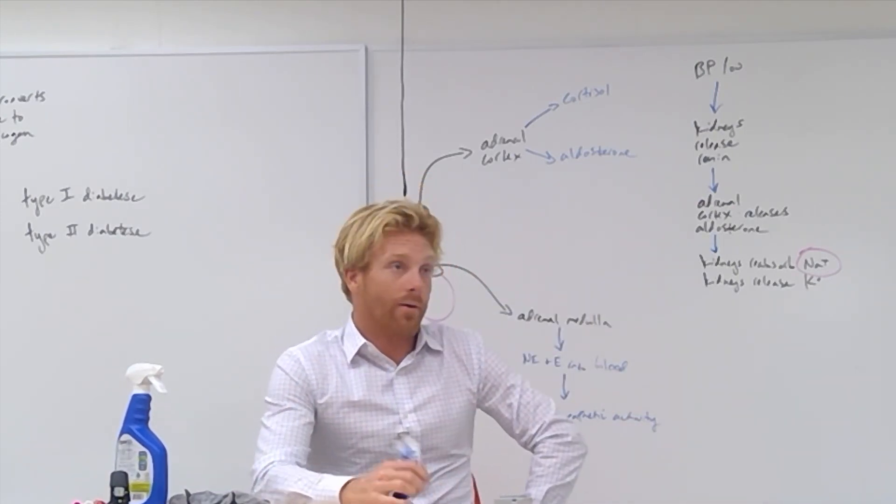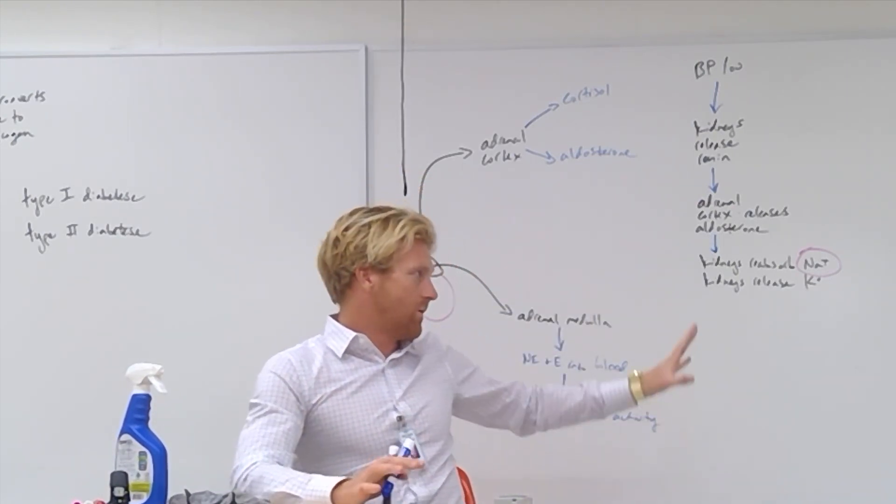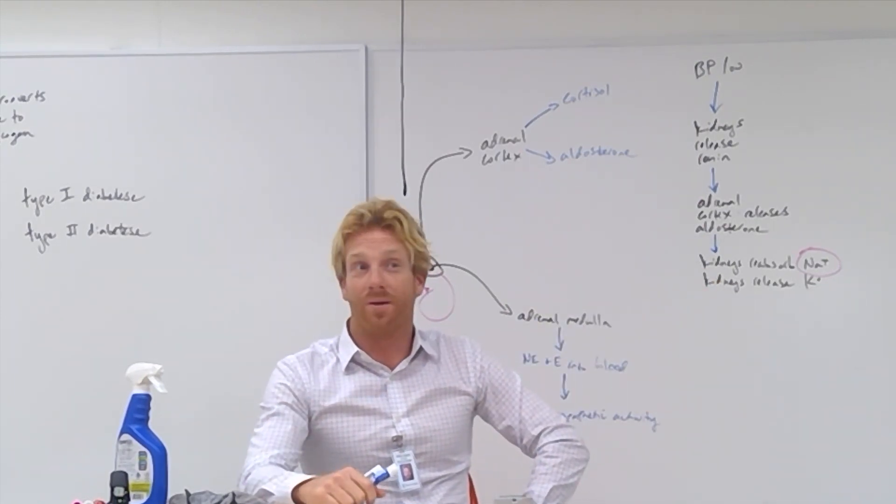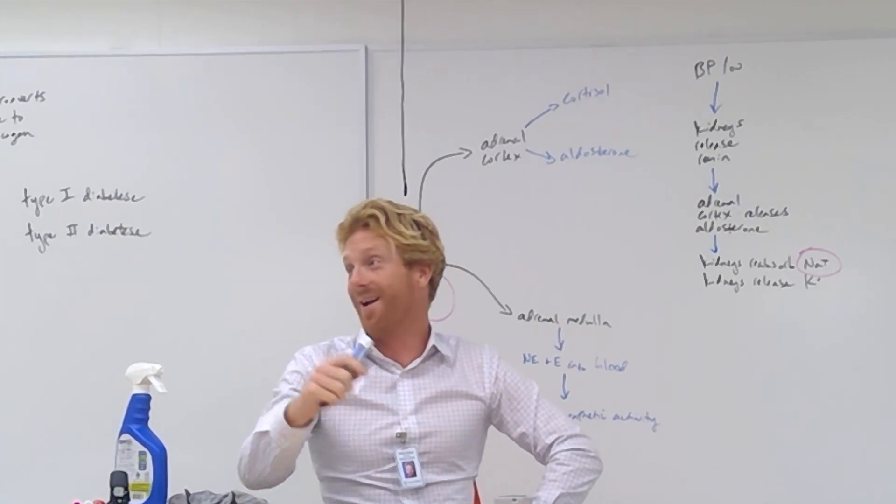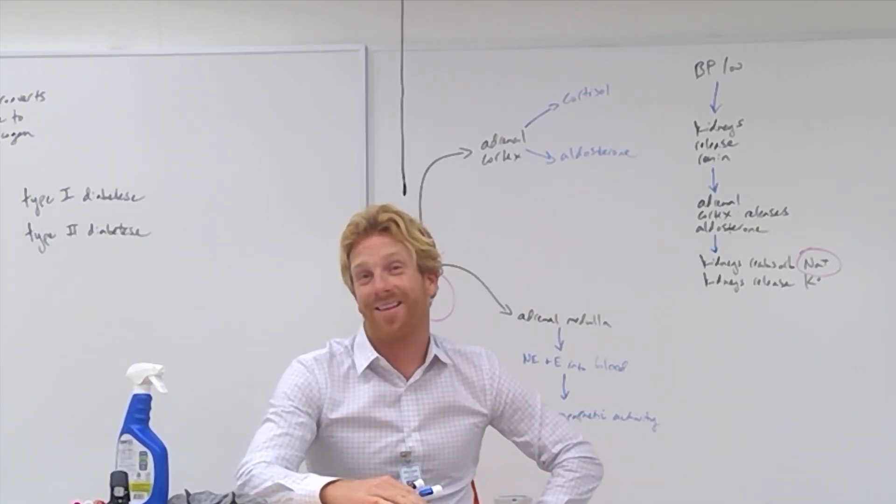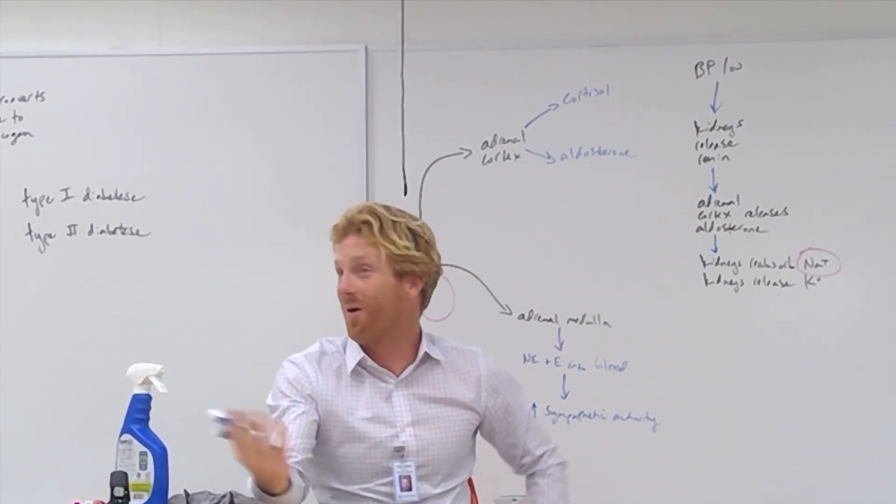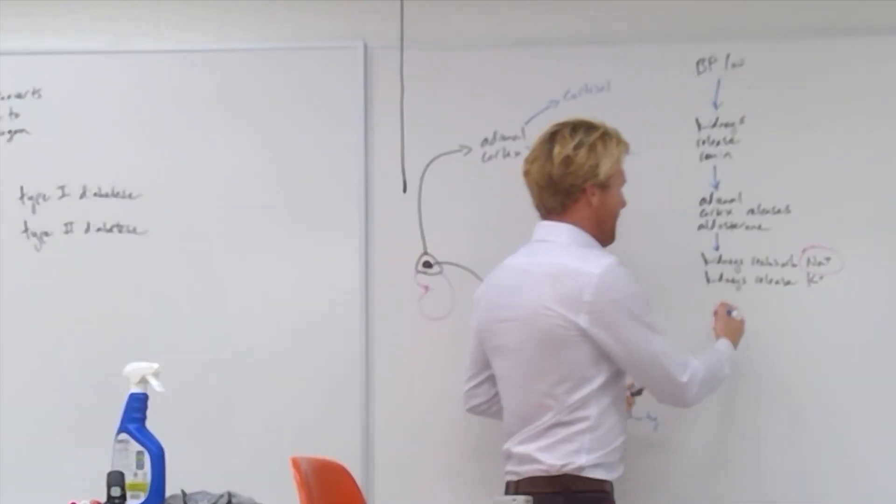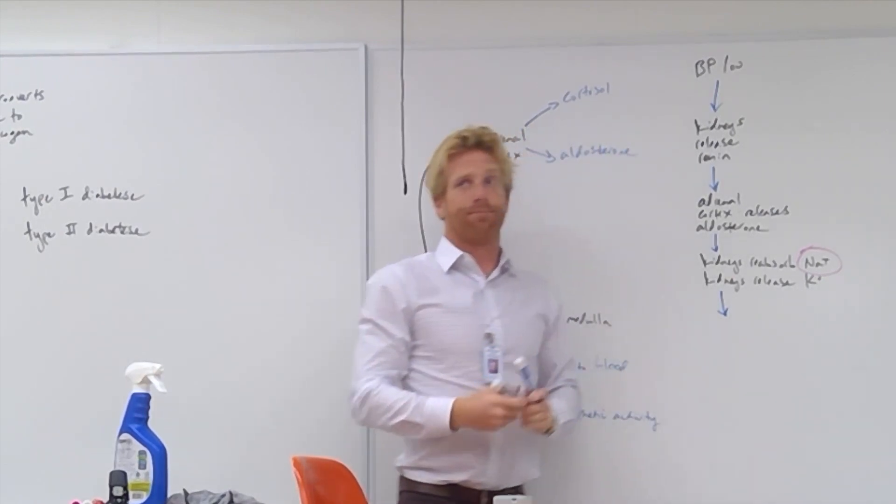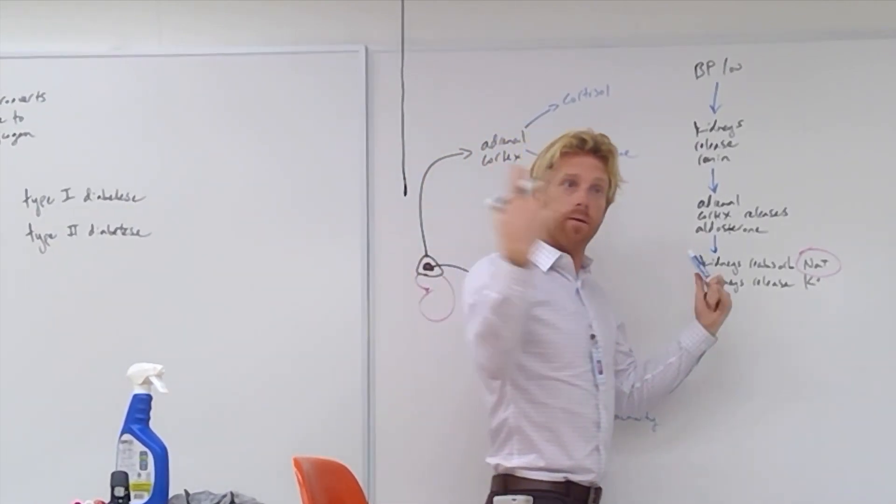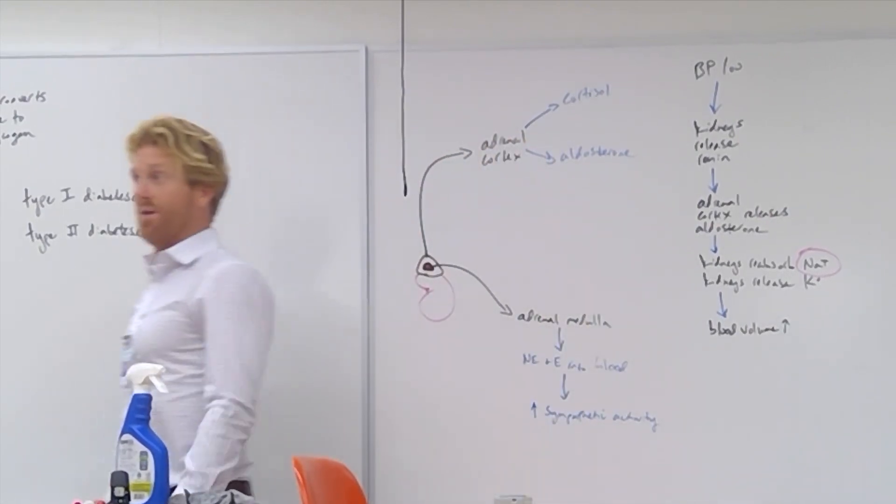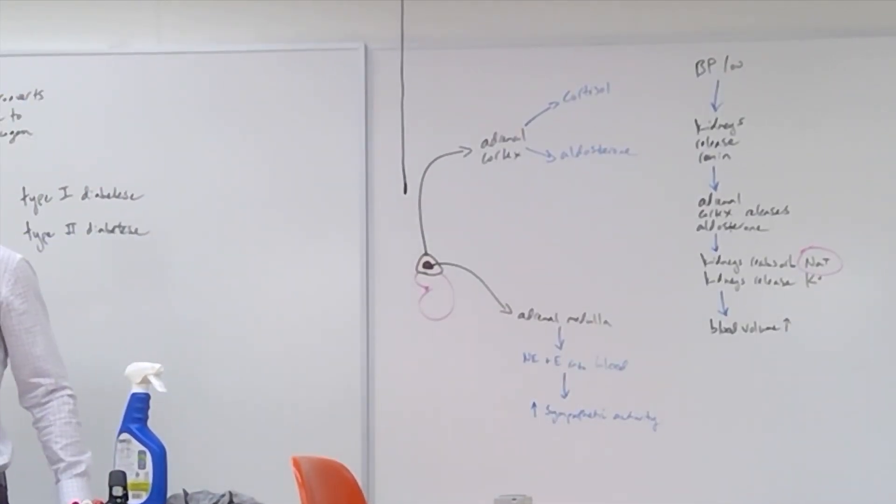The kidneys reabsorb salt. What do you think water is going to do? Get reabsorbed too or stay in the urine? Get reabsorbed too, right? So the water follows salt. So if water gets reabsorbed, what's going to happen to blood volume? Increase. It drops more water and more blood volume. If blood volume goes up, what happens to blood pressure? It goes up as well.